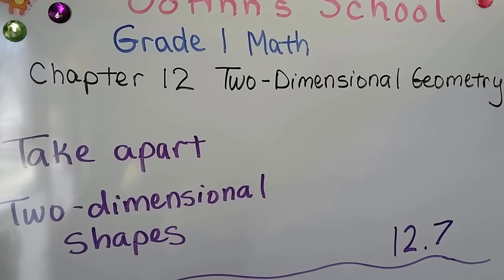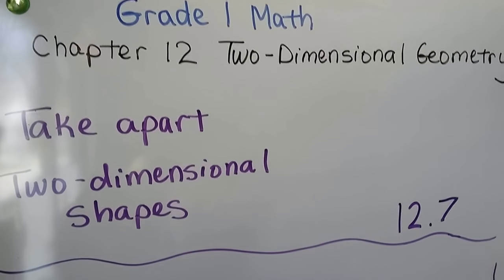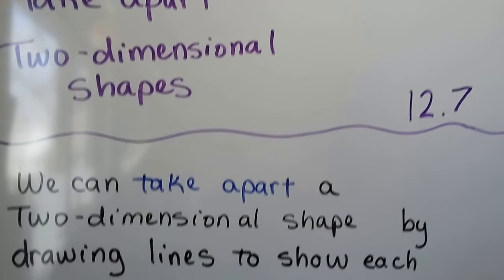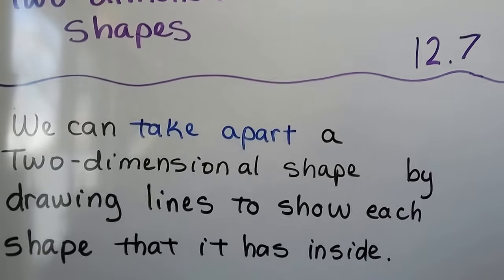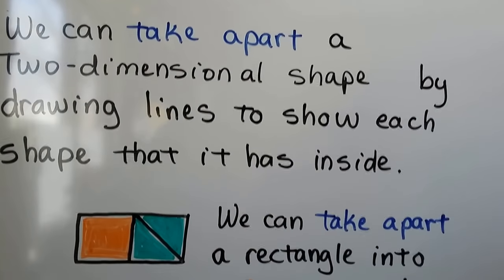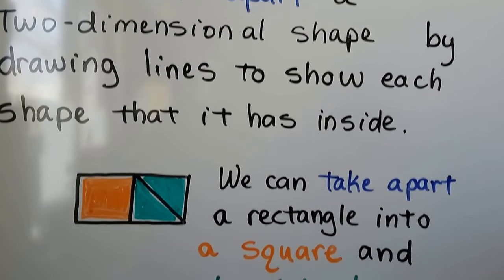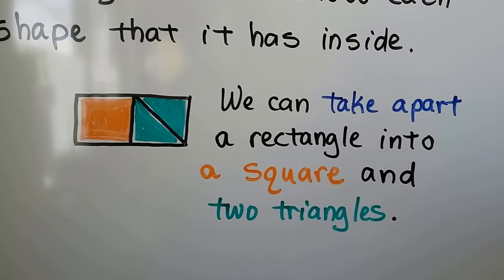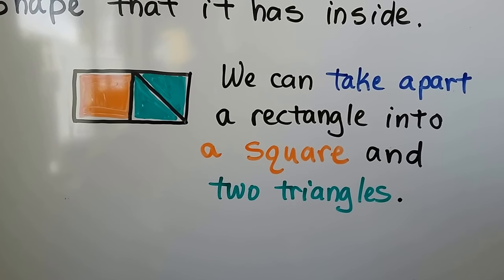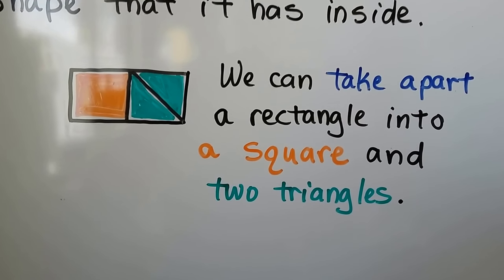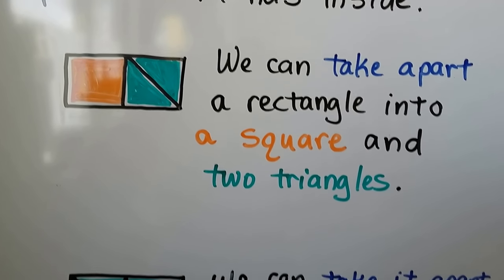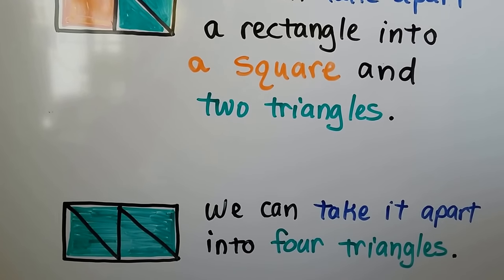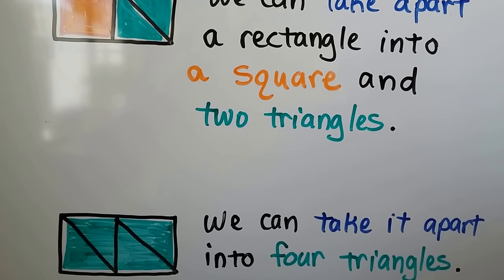Take apart two-dimensional shapes, lesson 12.7. We can take apart a two-dimensional shape by drawing lines to show each shape that it has inside. We can take apart a rectangle into a square and two triangles, or we can take it apart into four triangles.